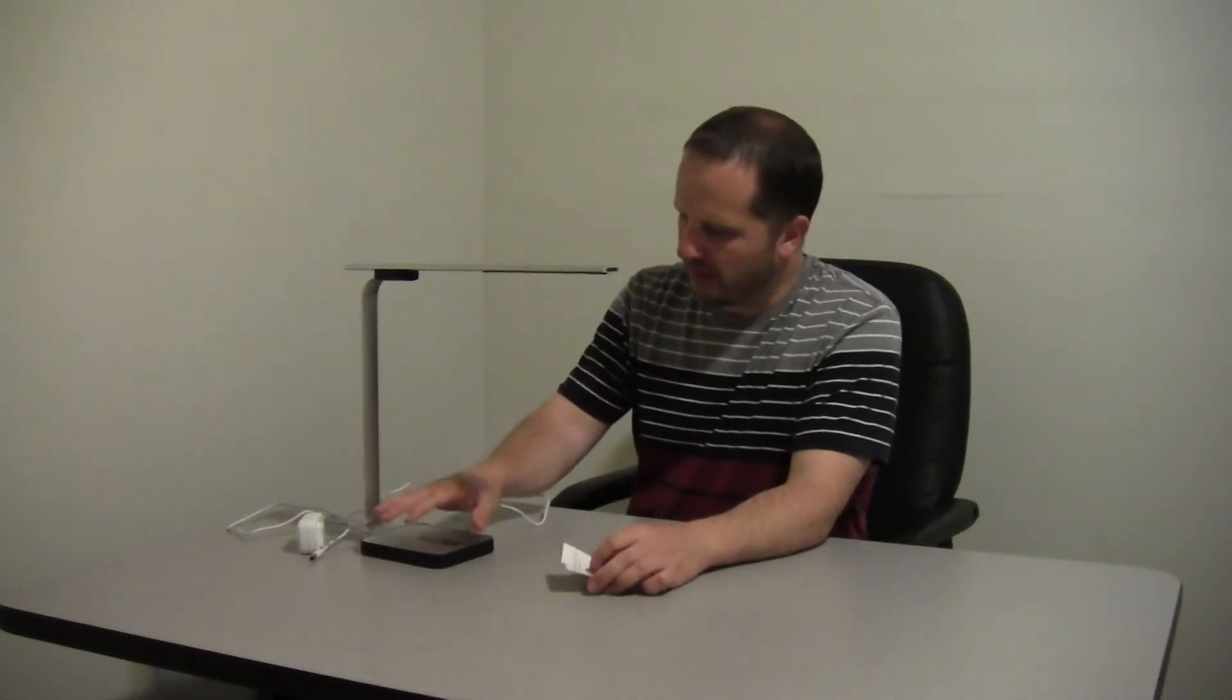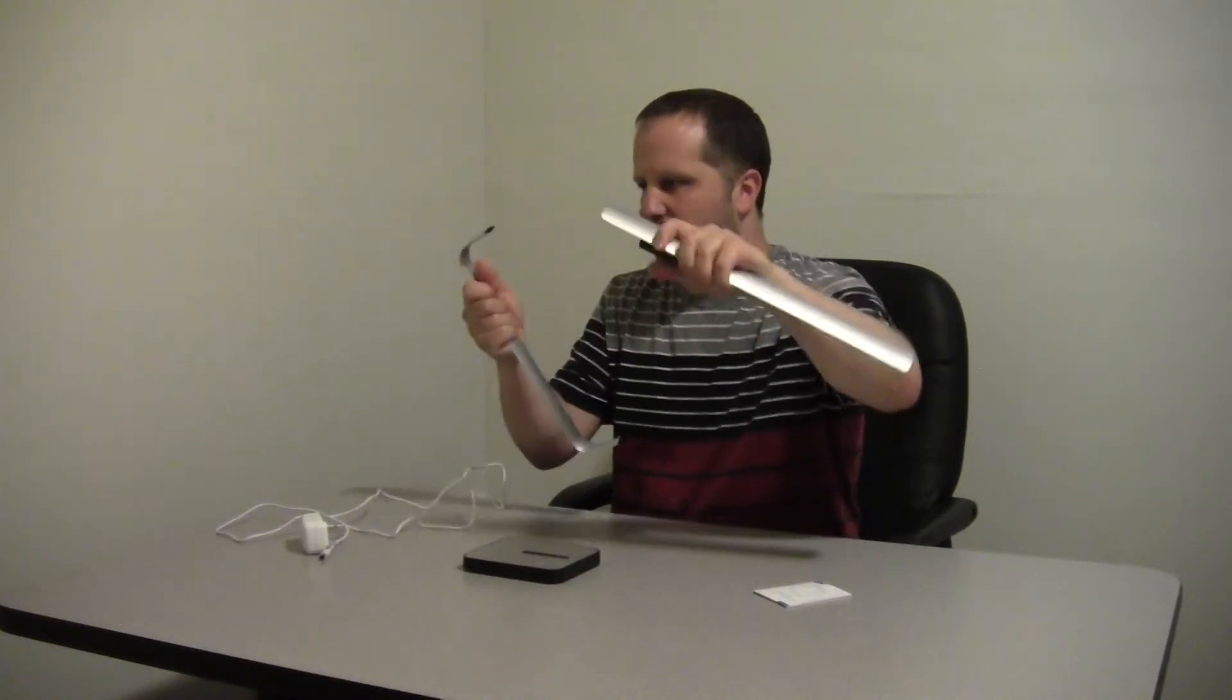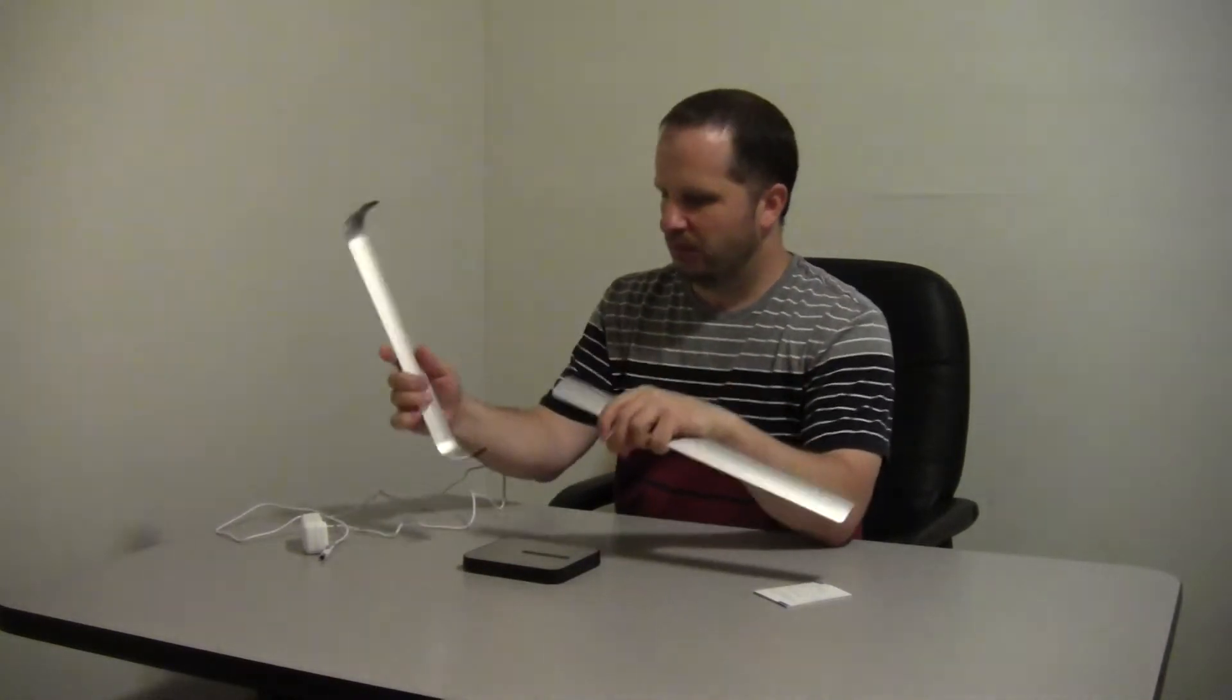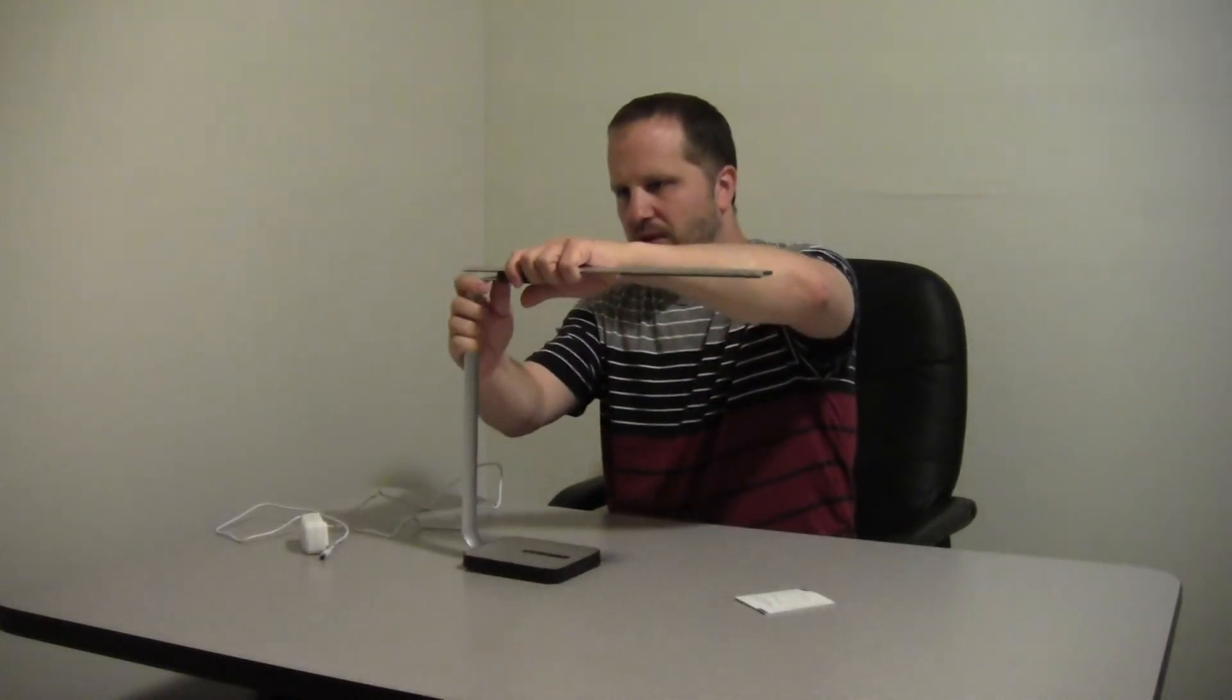Quite honestly you probably won't need the instructions because this is a very easy device to set up and use. Now as I said it comes in three pieces and it comes apart and goes together very easily. Basically you just slide the supporting arm in there, you slide the light bar on top, and you're set to go.